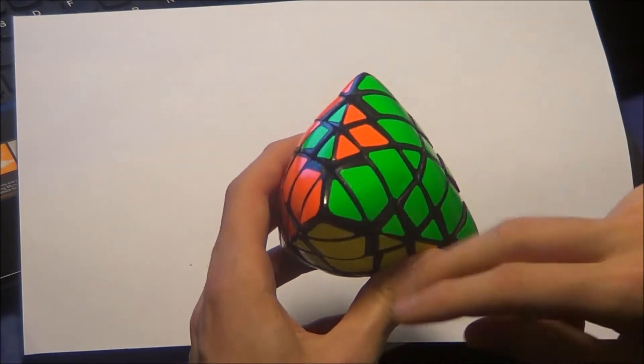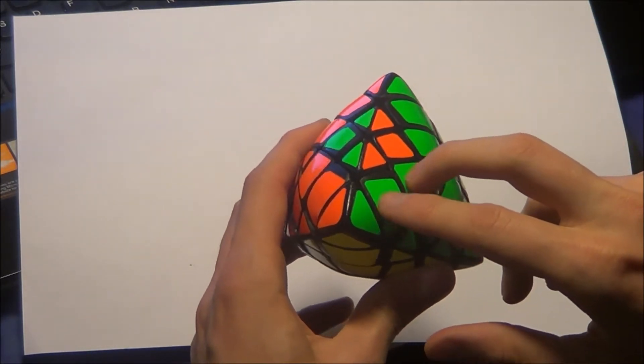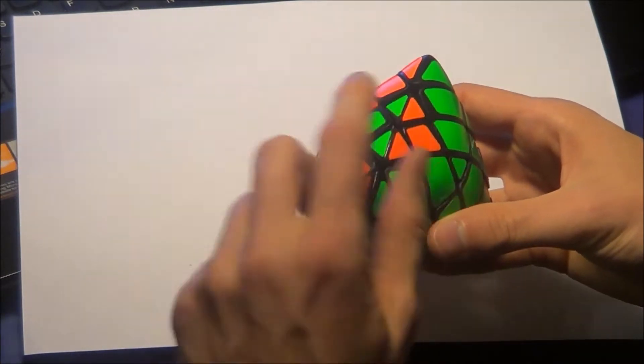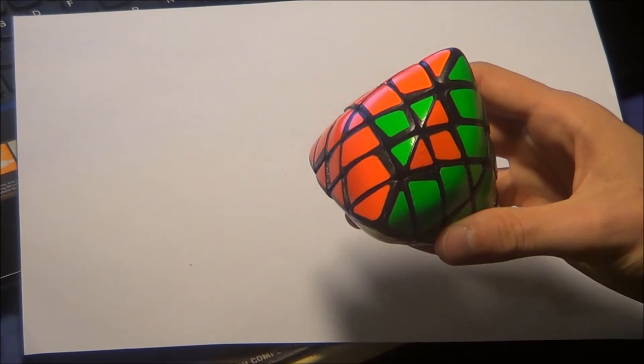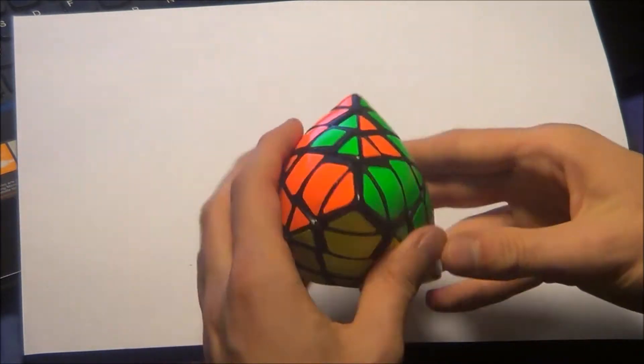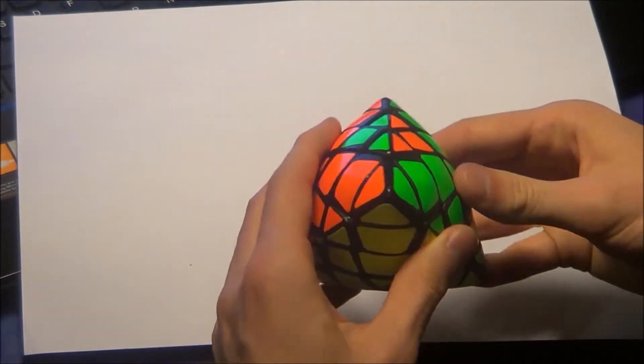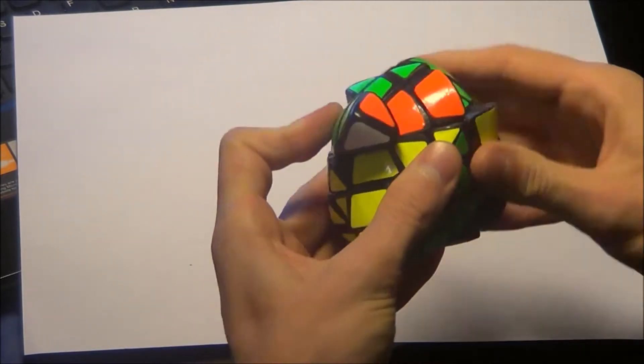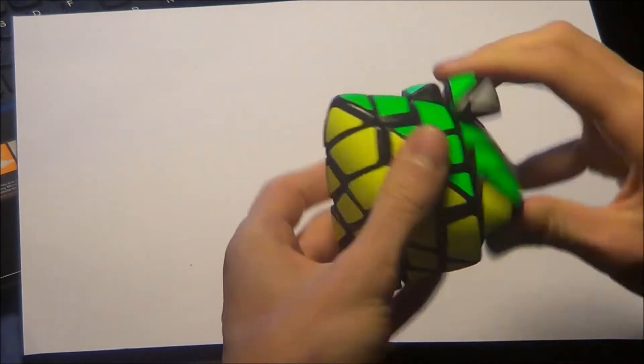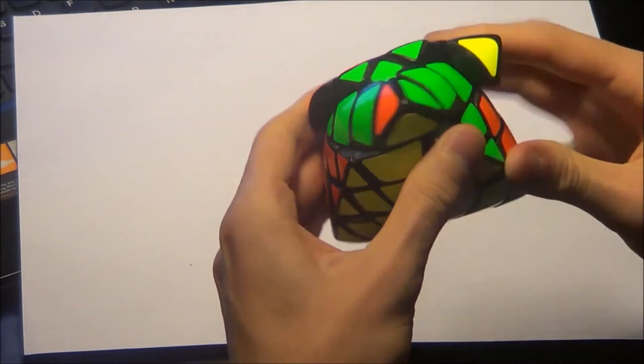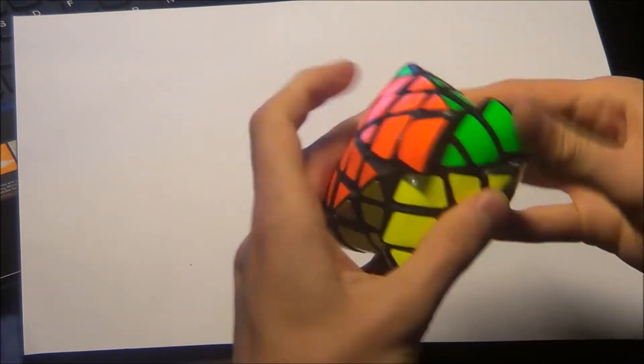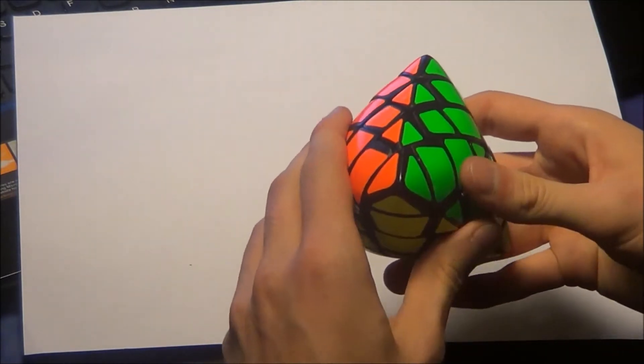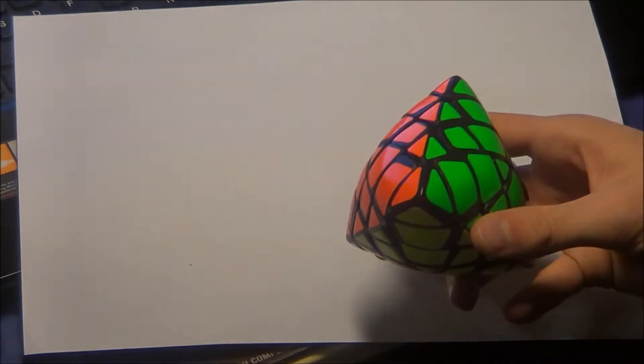And now you have flipped these paired edges here. The last thing you have to do is orientate the center here, but this is the same as on the normal Mastermorphics—two D-perms. The puzzle is solved. Okay, that was the first parity.